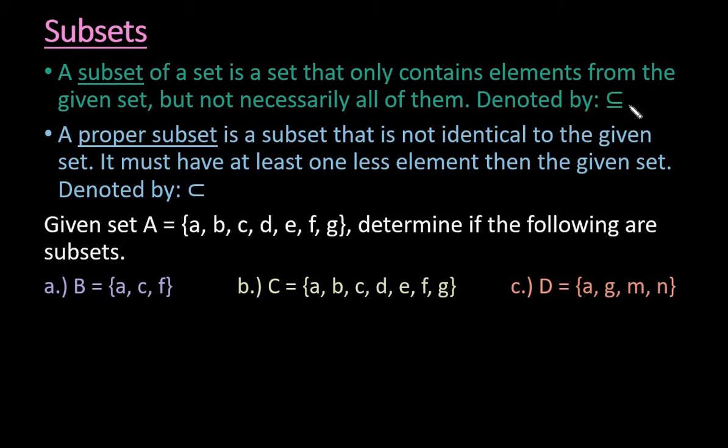Anytime you see this symbol, you read it as a subset. Notice that this one does have a line underneath it. That means that the subset could technically be the original set and have all of them.